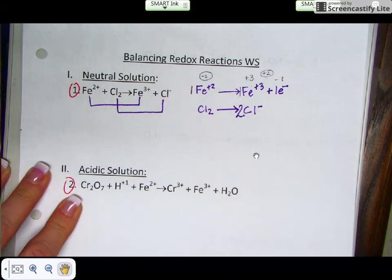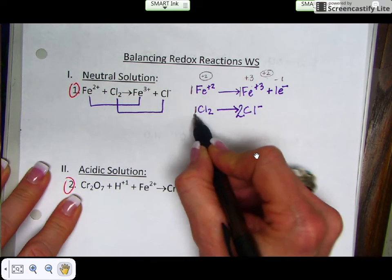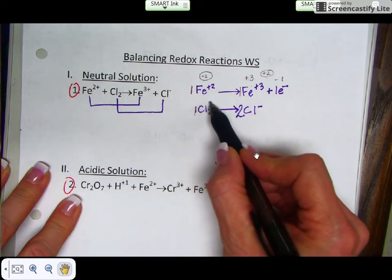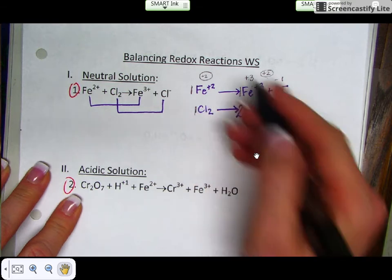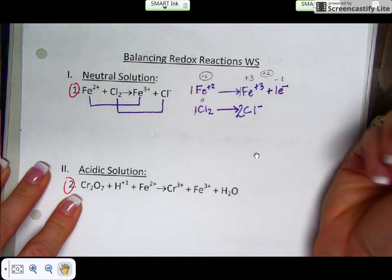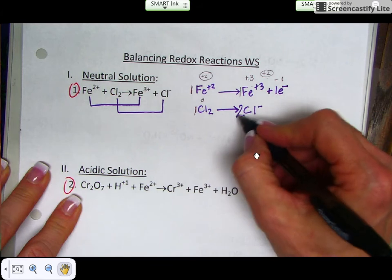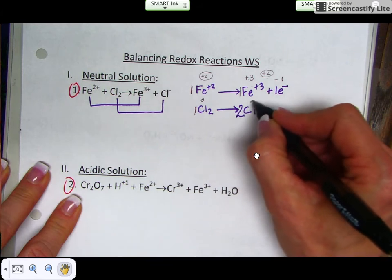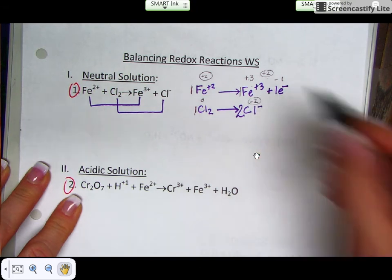Let's take a look at the other half reaction. This is an understood 1, and there's no charge here. This is neutral. So 1 times 0 gives you 0 on this side for the overall net charge. 2 times a -1 here gives me a -2 on this side.